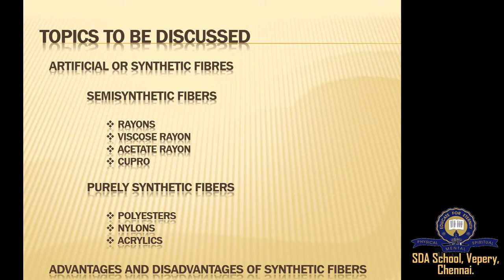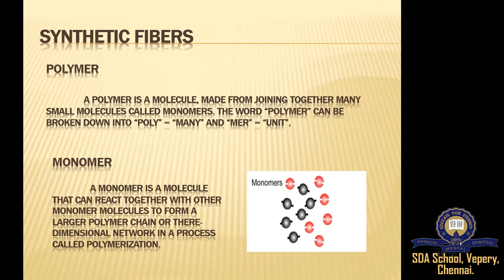Synthetic or artificial fibers like cotton, silk, and wool belong to a class of substances called polymers. A polymer is a molecule made up of many small molecules joined together. Those small units are called monomers. Mono means one, mer means unit. Many monomers joining together leads to the formation of a polymer — poly means many, mer means unit.